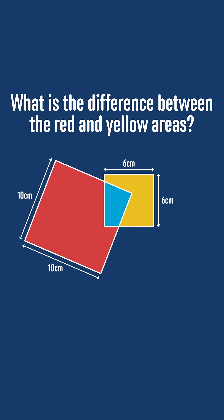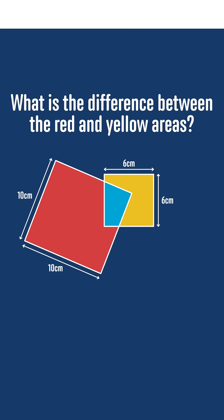The diagram shows two overlapping squares of side lengths 10 centimeters and 6 centimeters, creating a red region, a blue region, and a yellow region. What is the difference between the areas of the red and yellow regions?